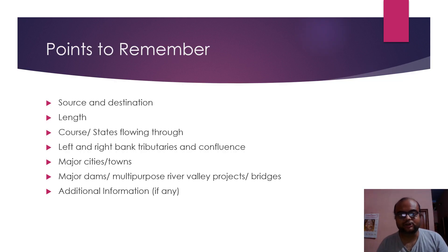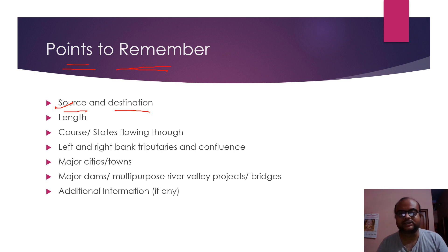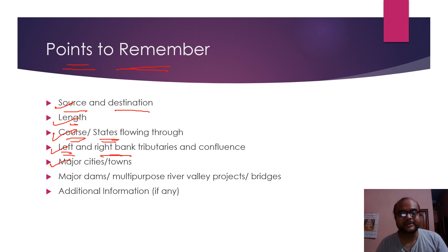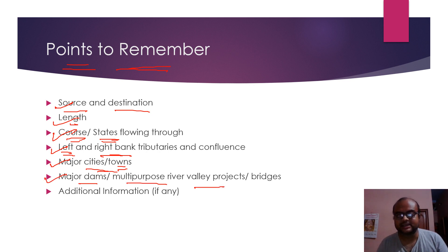In this river system, we have already mentioned the points in part 1. These are the points from the source and destination, the properties and the destination. What length is the point in this course. There is a state window — the flow of the river. The important thing is that the left and right bank tributaries are asked for questions, major cities and towns, major dams and multipurpose river valley projects, bridges and barracks, and additional information that we provide.